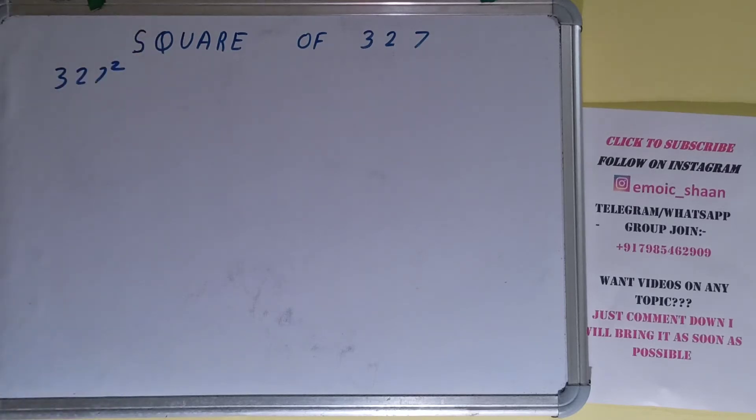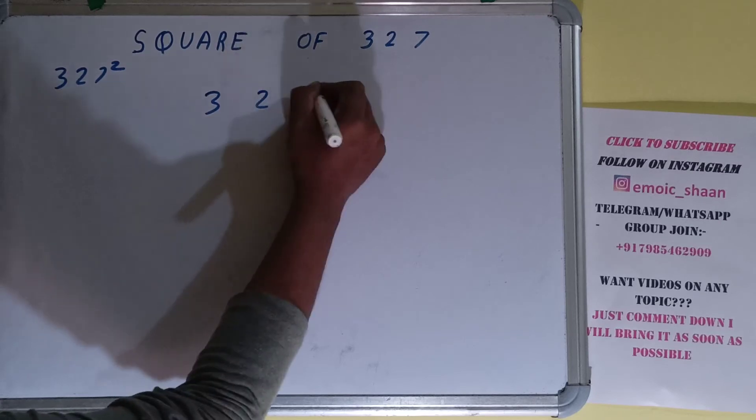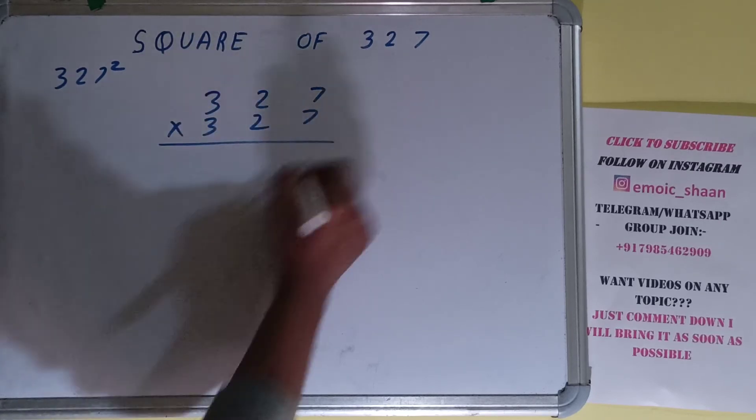Now coming on to the solution. Square basically means multiplying the number by itself. The number over here is 327. To find square of it, we need to multiply by itself, that is 327, and do the normal multiplication.